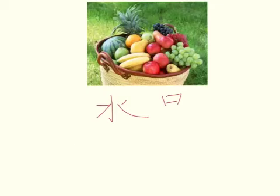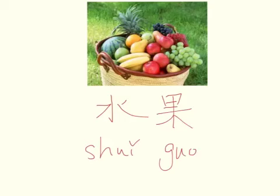水果. In your notes, please remind yourself how the third-third tone change rule works, and give me another example other than 水果. 水果 means fruit.